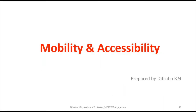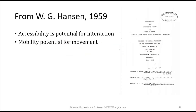Good morning everyone. In this video we are going to see mobility and accessibility, or simply movement and accessibility. In 1959, W.G. Hainson submitted a thesis on accessibility and residential growth at MIT. In his thesis, he explains accessibility as the potential for interaction, and mobility as the potential for movement. That was the first thesis about accessibility and mobility.